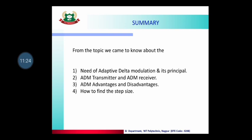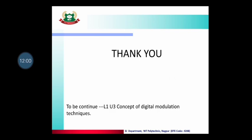To summarize: we studied the disadvantages of Delta Modulation — slope overload distortion and granular noise — and how Adaptive Delta Modulation (ADM) reduces them. We covered the ADM transmitter, receiver, advantages, disadvantages, and the waveform showing how the step size delta_k is calculated at different clock pulses using the formula. Thank you dear students for watching this video. Next, we will start Unit 3, whose first topic is the concept of digital modulation techniques.